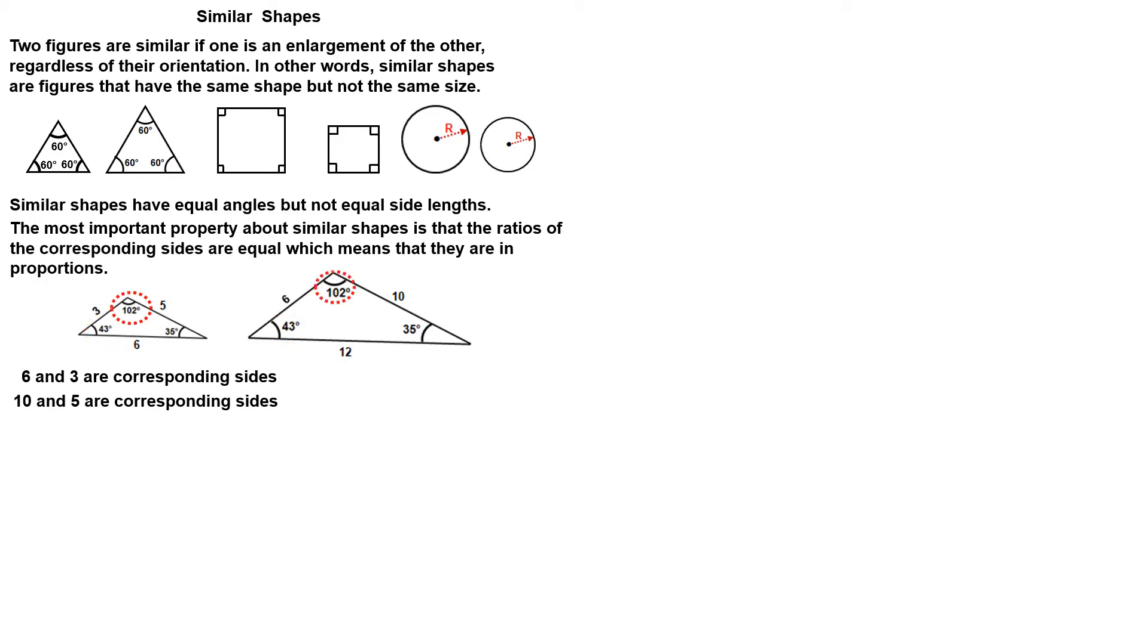12 and 6 are corresponding sides. Similar figures have corresponding sides in the same ratio or same proportion. I will set up my proportions using ratios in the form big shape length over small shape length. We can say that 6 is to 3, as 10 is to 5, as 12 is to 6.